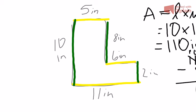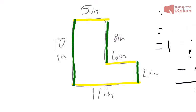Now, another way that I could do this — I'm going to erase this for a second. I'll try to get as much of it off as I can. Now I'm going to do this a different way. I'm going to take the shape and break it into two, so that black line breaks it into two rectangles.